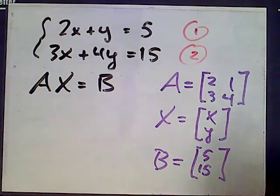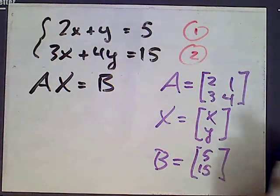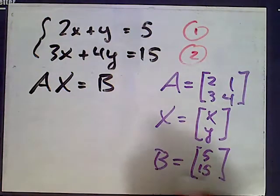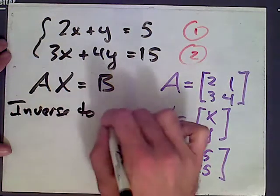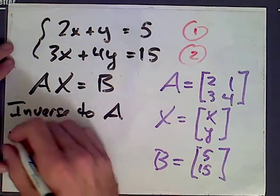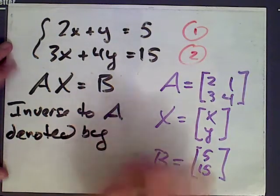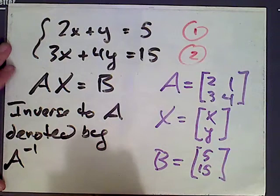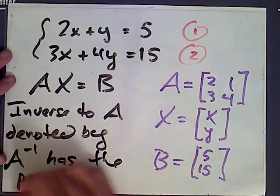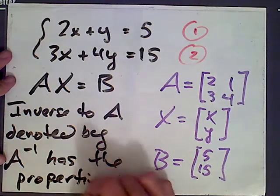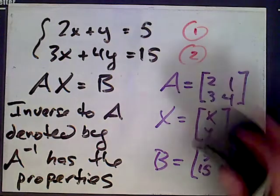An inverse matrix is a matrix with the following property: the inverse to A, denoted by A inverse, has the following properties.